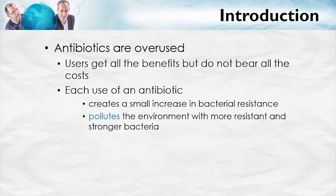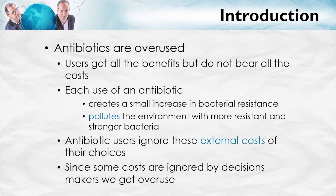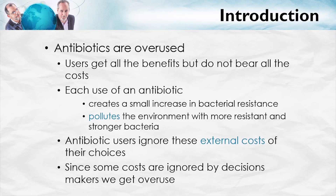Farmers who use antibiotics not to combat disease in their livestock but to help the livestock grow faster also create more bacterial resistance. But that resistance is something they don't include in their calculus of costs — they don't pay attention to those costs which are borne by other people. When antibiotic users ignore the external costs of their choices, we get overuse, since some costs are ignored by the decision makers.